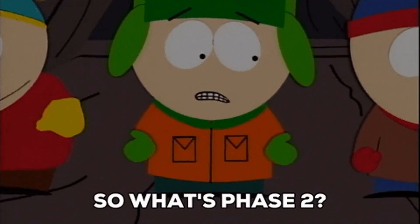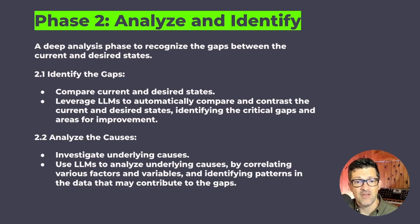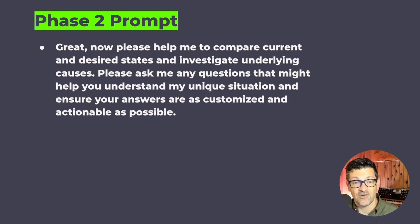Now we're getting into phase two: the actual gap analysis. This has two parts — identifying the gaps and identifying the causes for those gaps. You're comparing your current state to your desired state and investigating the underlying causes, and we're going to use ChatGPT to help. The prompt I use here is: 'Now, please help me compare the current state to the desired state, investigating underlying causes' — and again, asking any questions. That 'ask questions' piece is a critical part of the prompt.